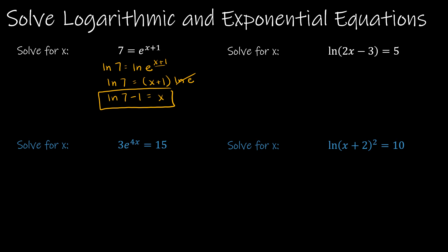For solving a logarithmic equation, get the natural log by itself first — it's already isolated here. To remove the natural log, exponentiate each side using e as the base, because e and natural log are inverses that cancel. This leaves 2x minus 3 on the left and e to the fifth on the right. Adding 3 and then dividing by 2 gives x equals (e to the fifth plus 3) divided by 2.